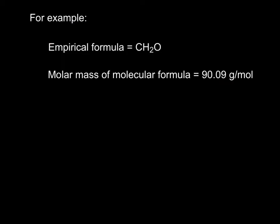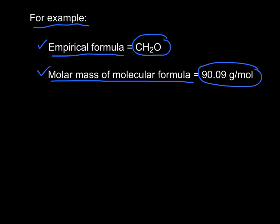So let's say, here's an example. You would need to be given both of these things: the empirical formula, which is this, and the molar mass of the molecular formula, which is this. So step one is find the mass of your empirical formula. So if you add all that up, 12.01 plus 2 times 1.01 plus 16, you're going to get 30.03 grams per mole.